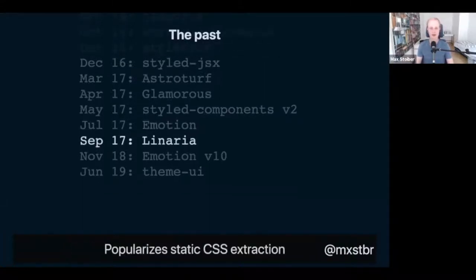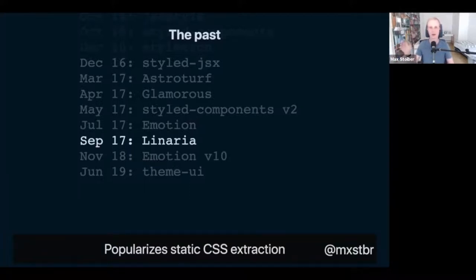In September 2017, Callstack — an agency from Poland — released Linaria, a fantastic CSS-in-JS library that does the same thing as AstroTurf: you write your CSS in JavaScript but extract it to a CSS file. But they actually made it work with the Styled Components API. So if you want the Styled Components API and a CSS file as output, you can use Linaria. Great library — highly recommend checking it out.